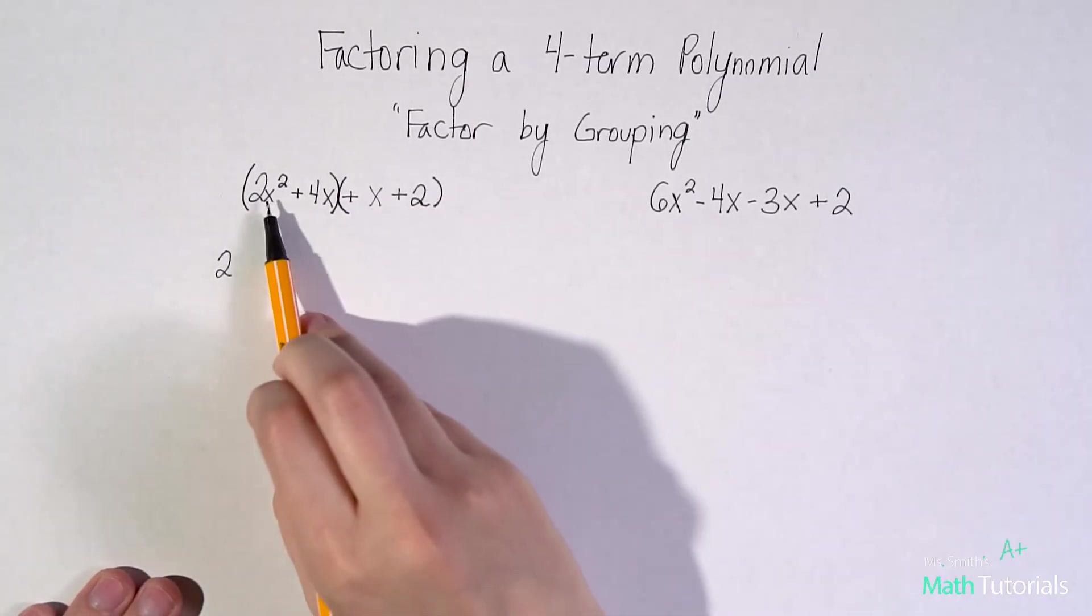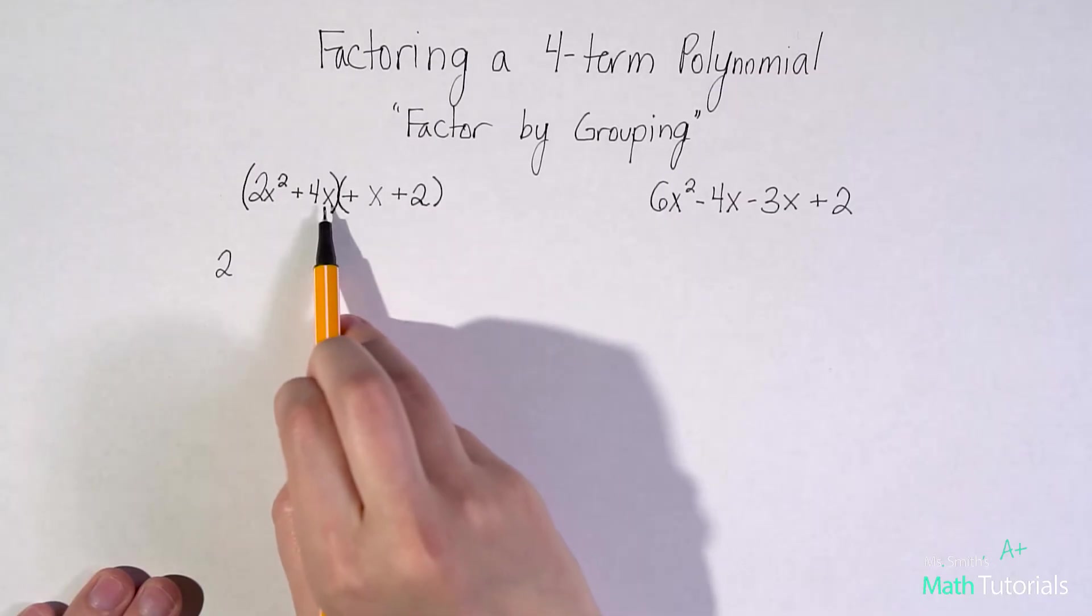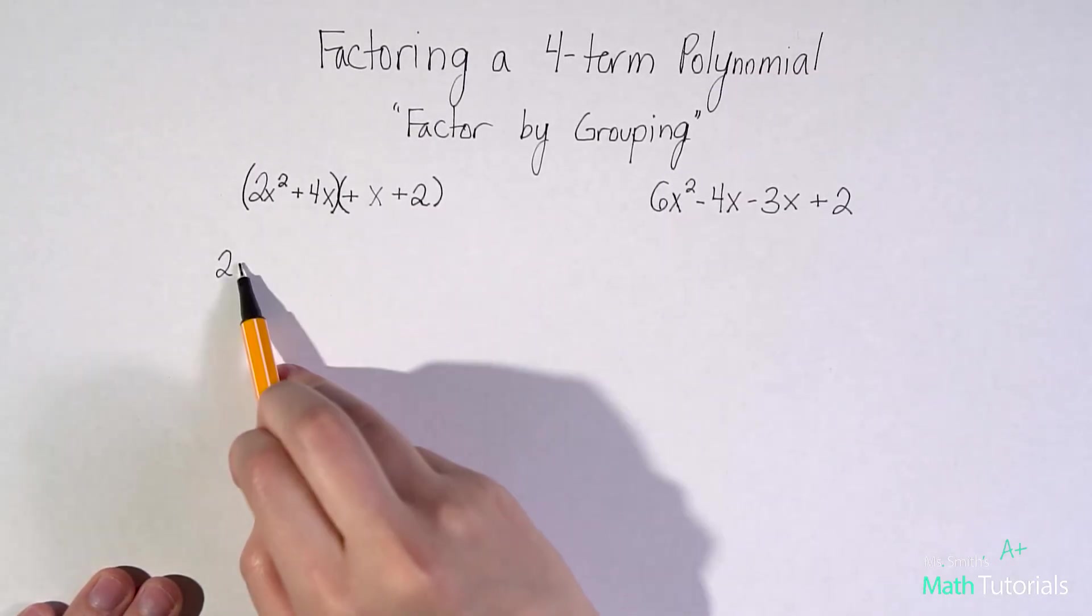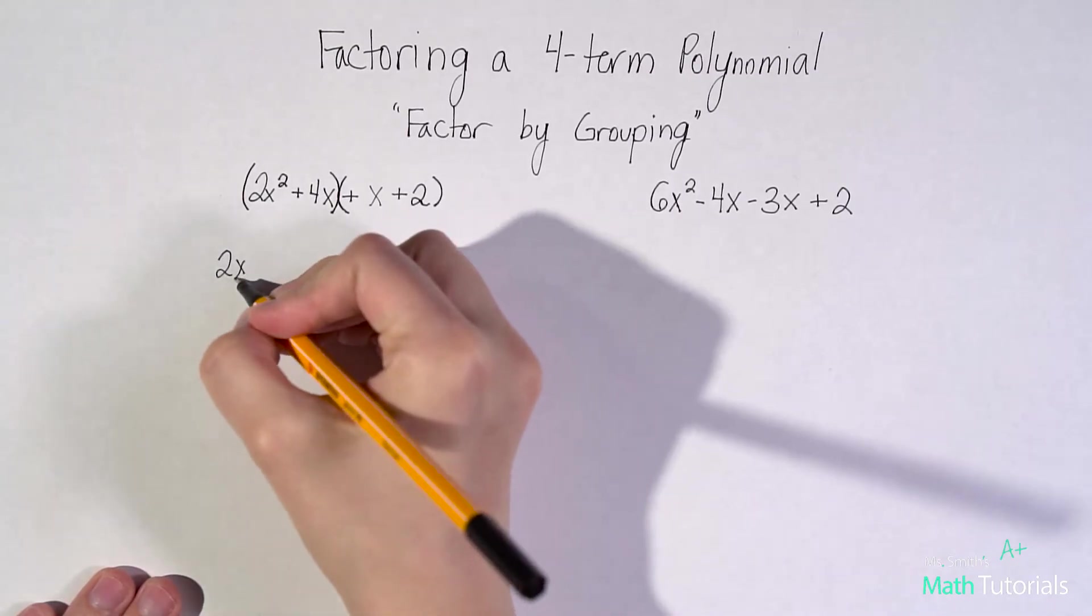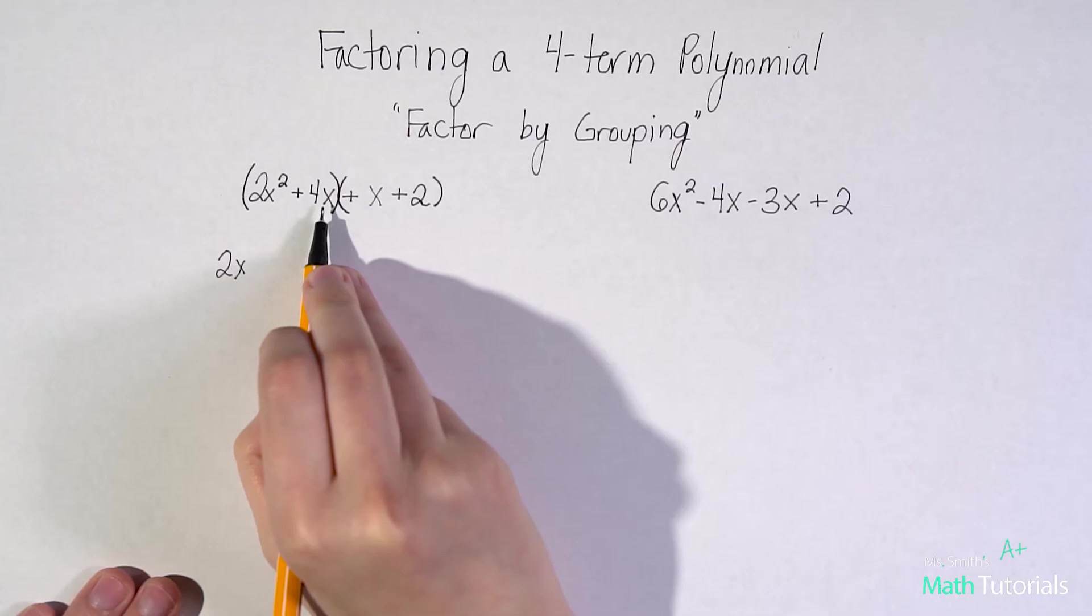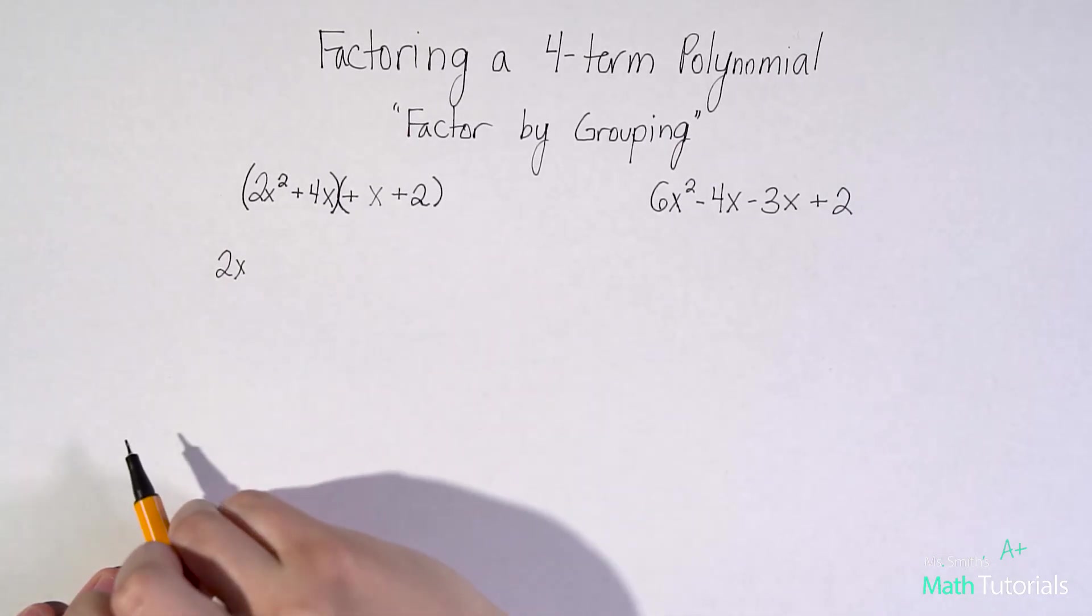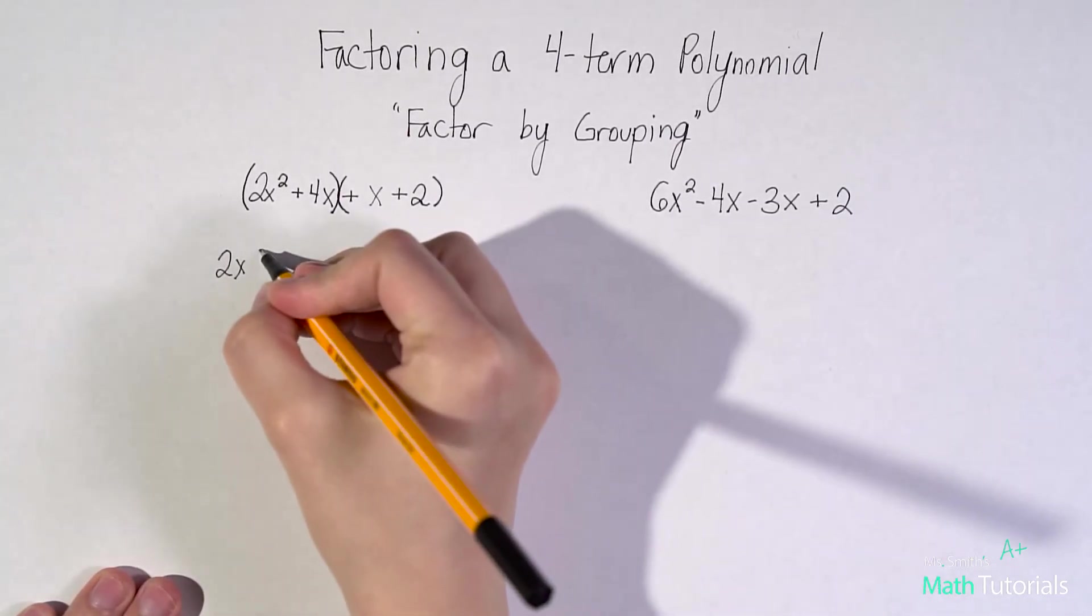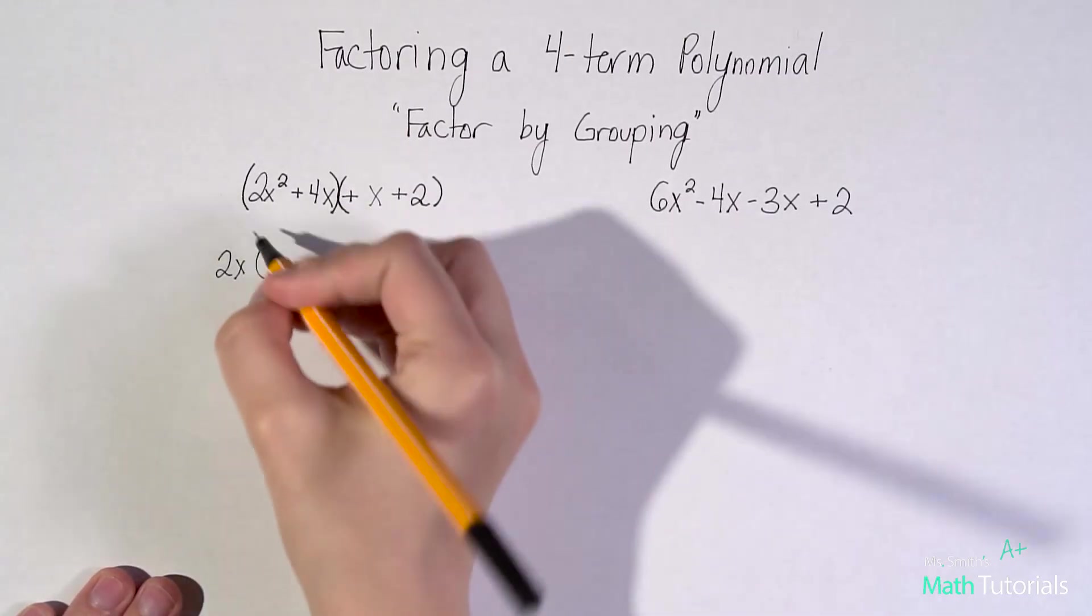Now what about the x's? I've got x squared and then just 1x. The most they can give me would just be 1x, right? Even though that one has 2, that one only has 1 to give, so that's the most you can pull out.